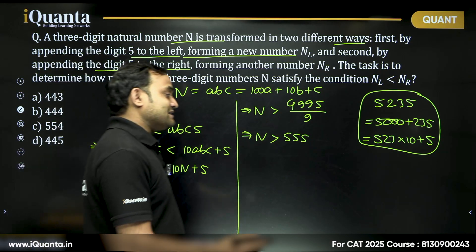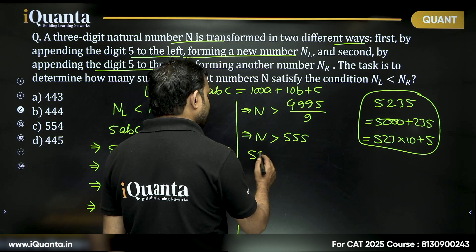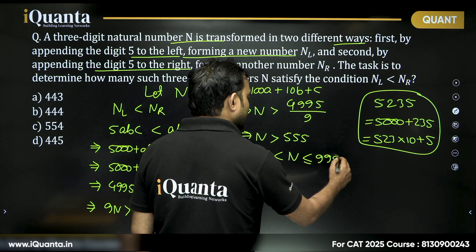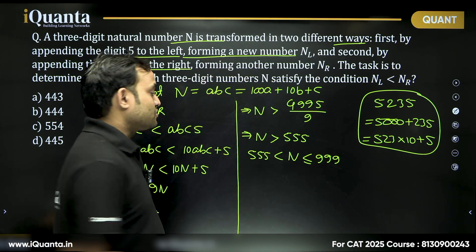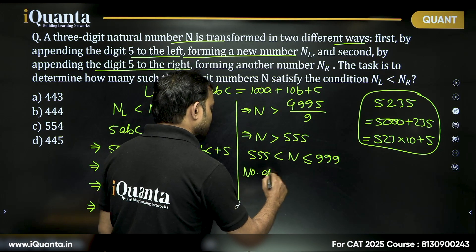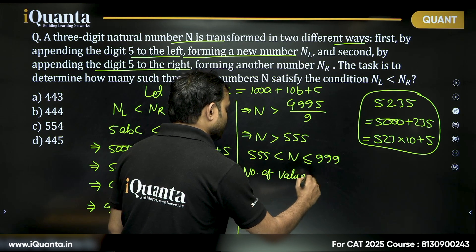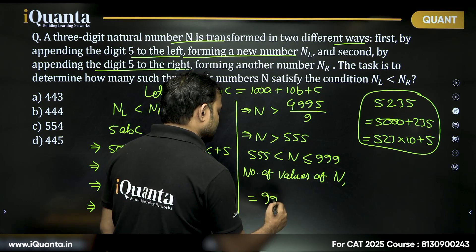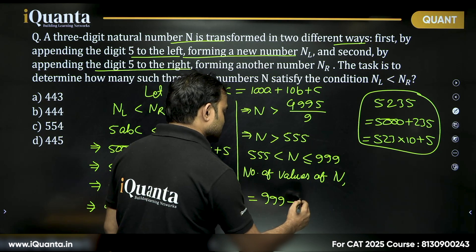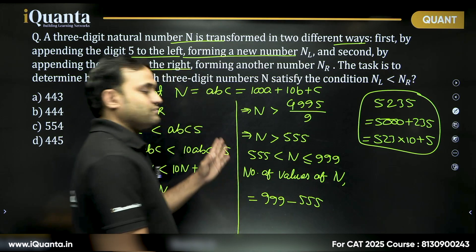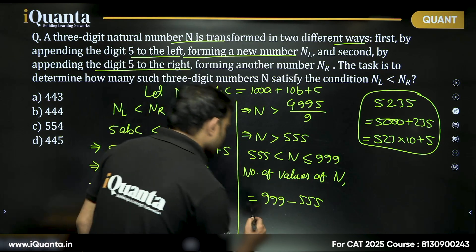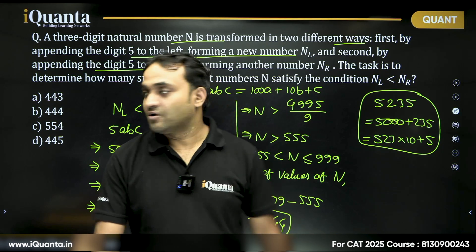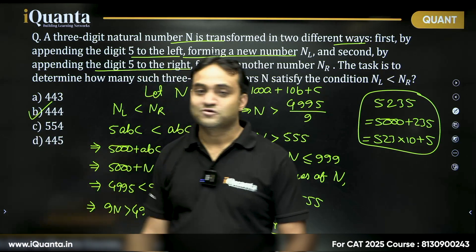What do we know about n? n is a three-digit number. Can I say n is greater than 555 but less than equal to 999, right? So, number of values of n. How many values n can take? Number of values of n will be equal to till 999. We need to subtract all the values till 555. So, we are getting 444. So, our answer is option b.